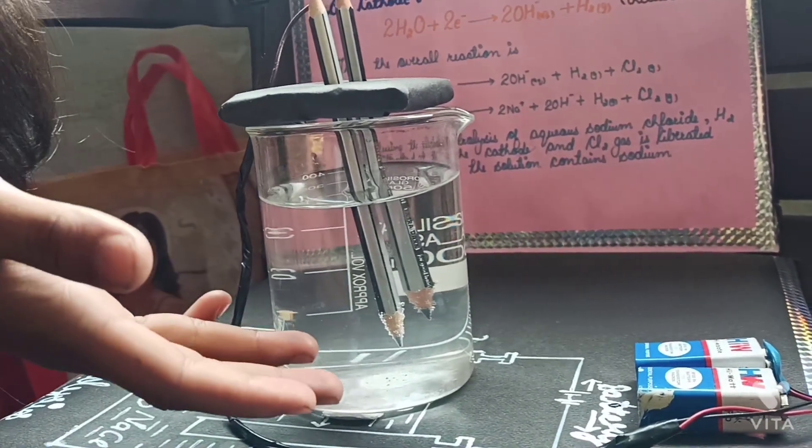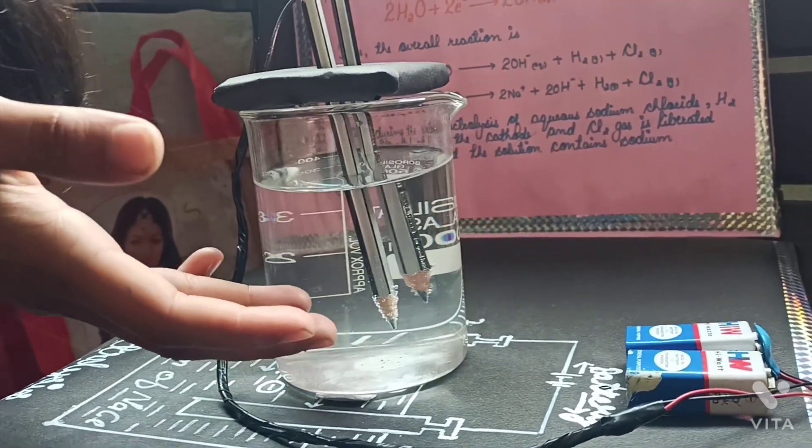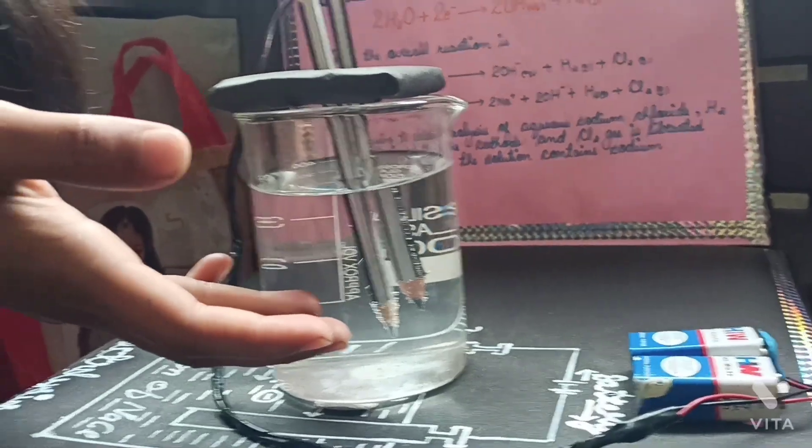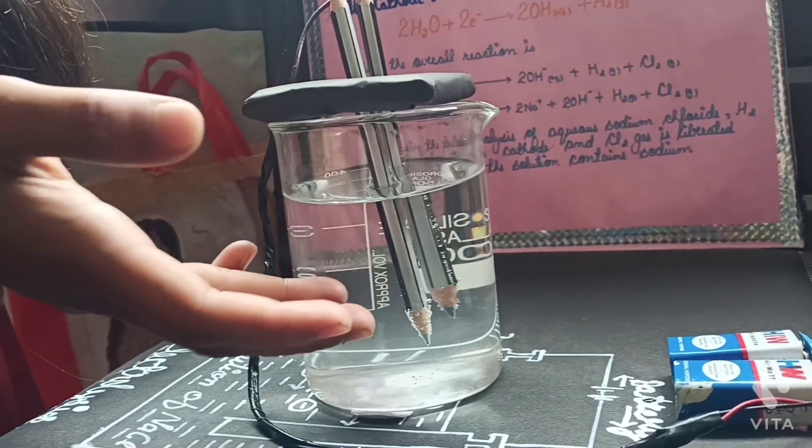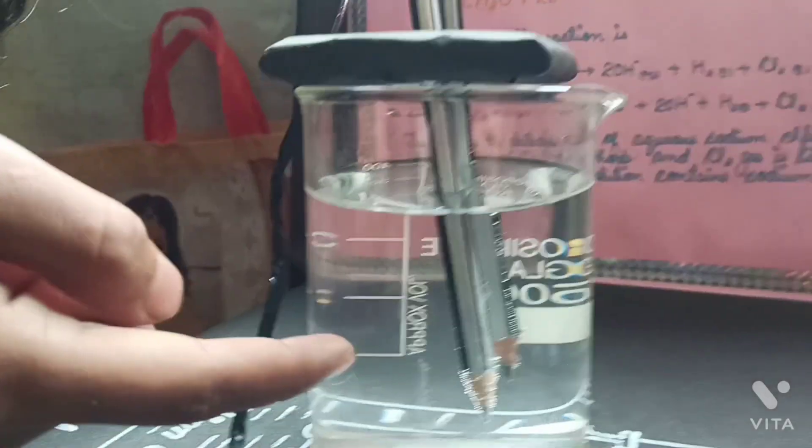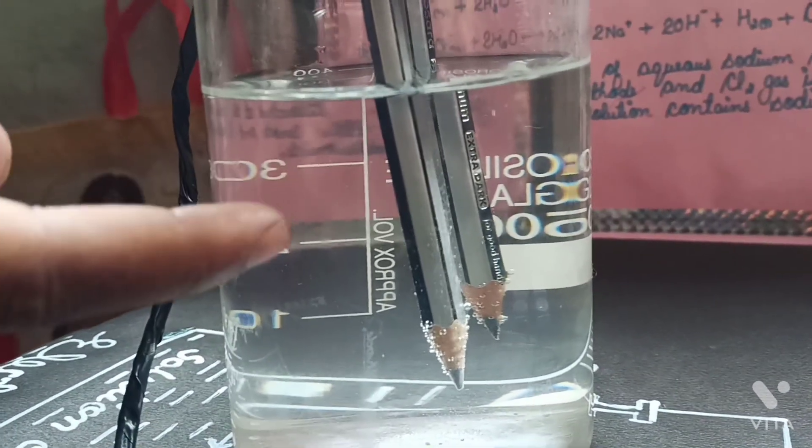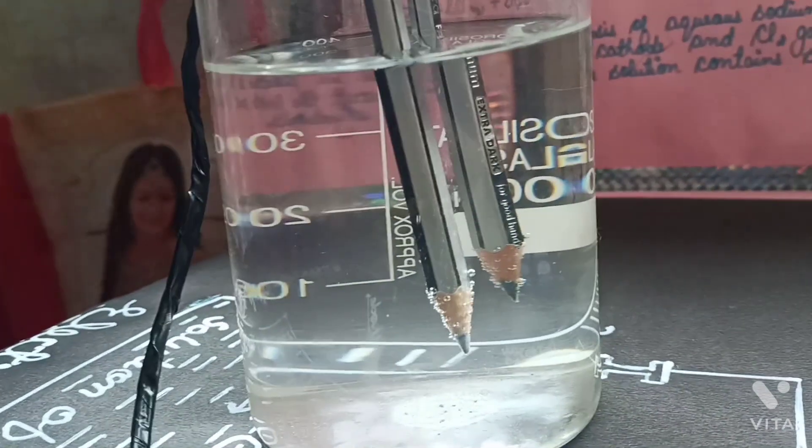The solution of sodium chloride will contain Na+, Cl-, H+, and OH- ions. When we pass electricity through this solution, chlorine gas will be liberated at the anode and hydrogen gas will be liberated at the cathode.